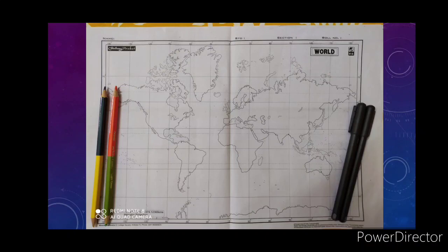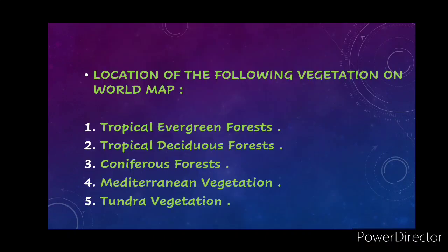First of all, we have to locate the following vegetation on the world map: tropical evergreen forest, tropical deciduous forest, coniferous forest, Mediterranean forest or vegetation, and tundra vegetation. These are the five natural vegetation types we have to point out on the map.